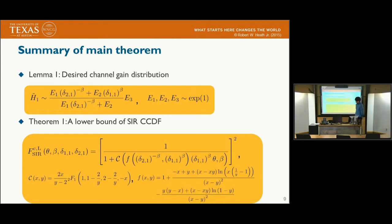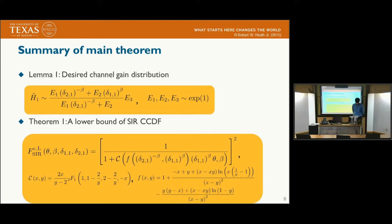Now we show the summary of the main theorem. The desired channel gain distribution is derived in this form. As you can observe, the desired channel gain is distorted by an amount corresponding to this value, compared to conventional centralized zero-forcing beamforming. By leveraging these expressions, we also derive a lower bound of the SIR distribution using the key lemma we derived.